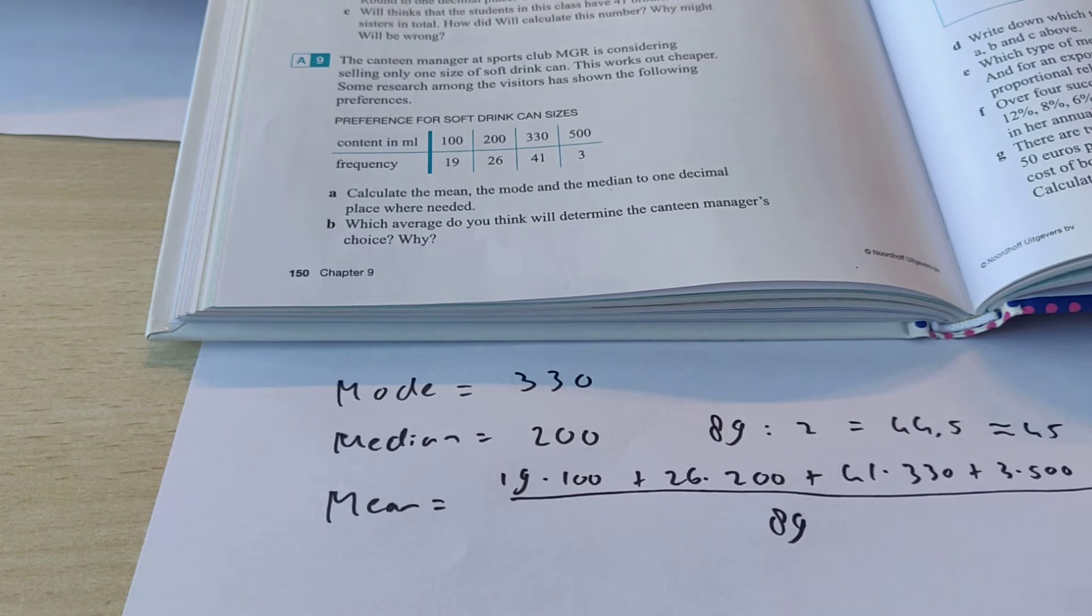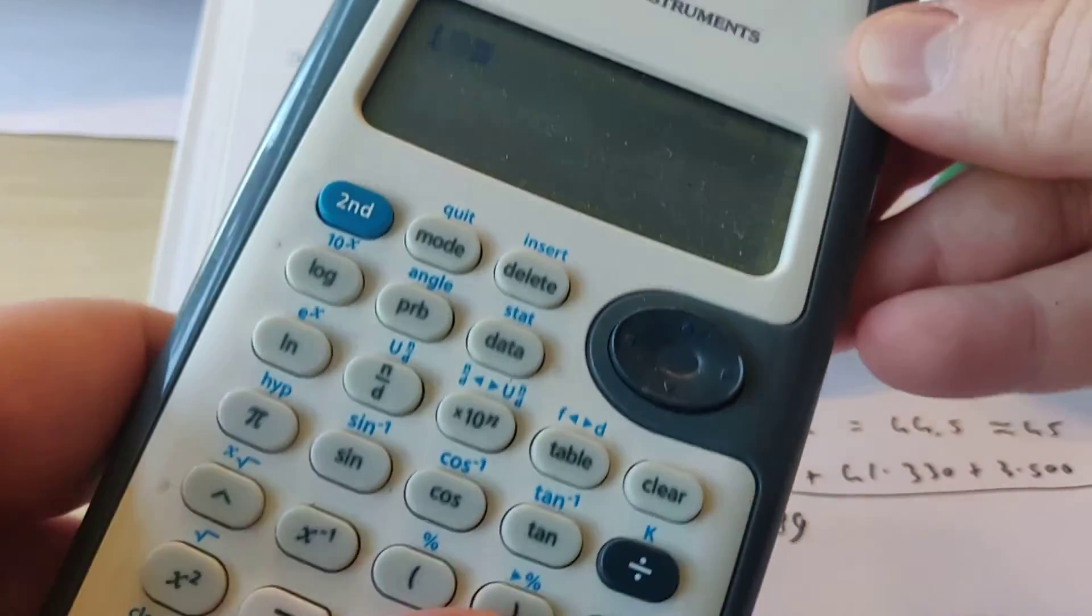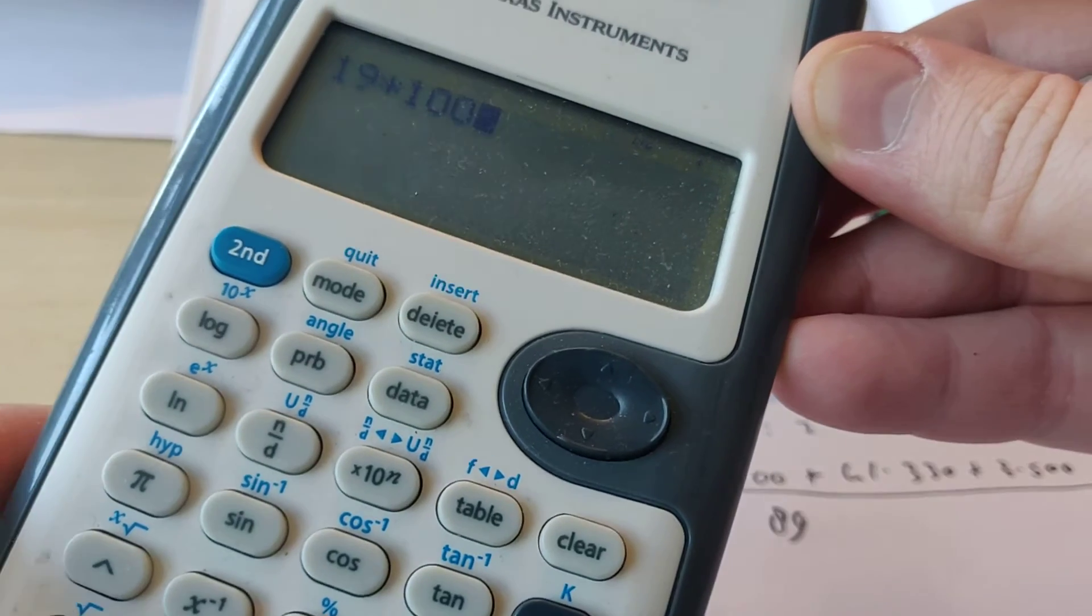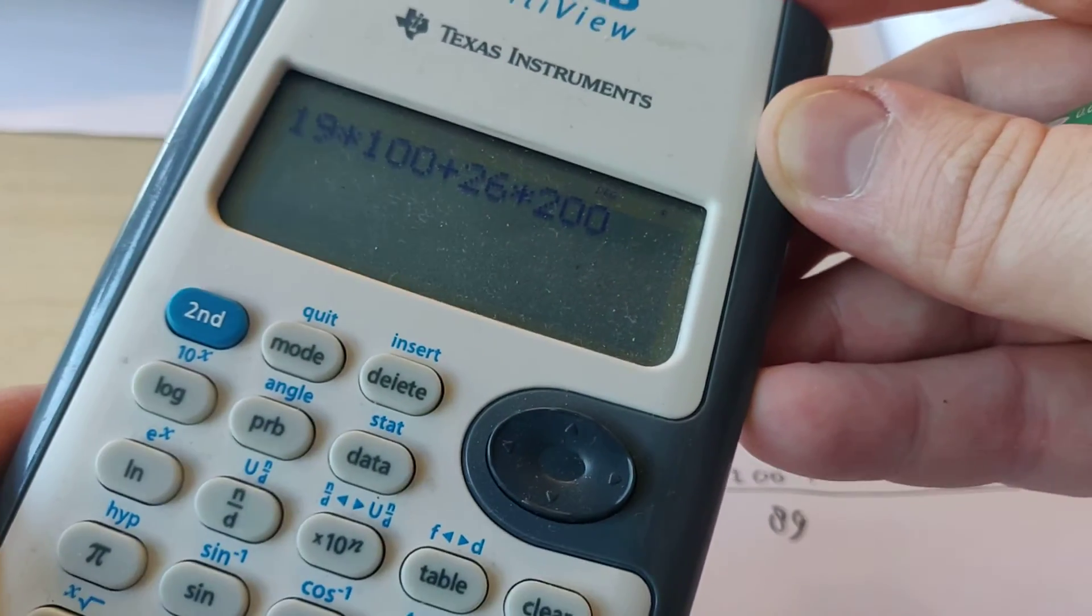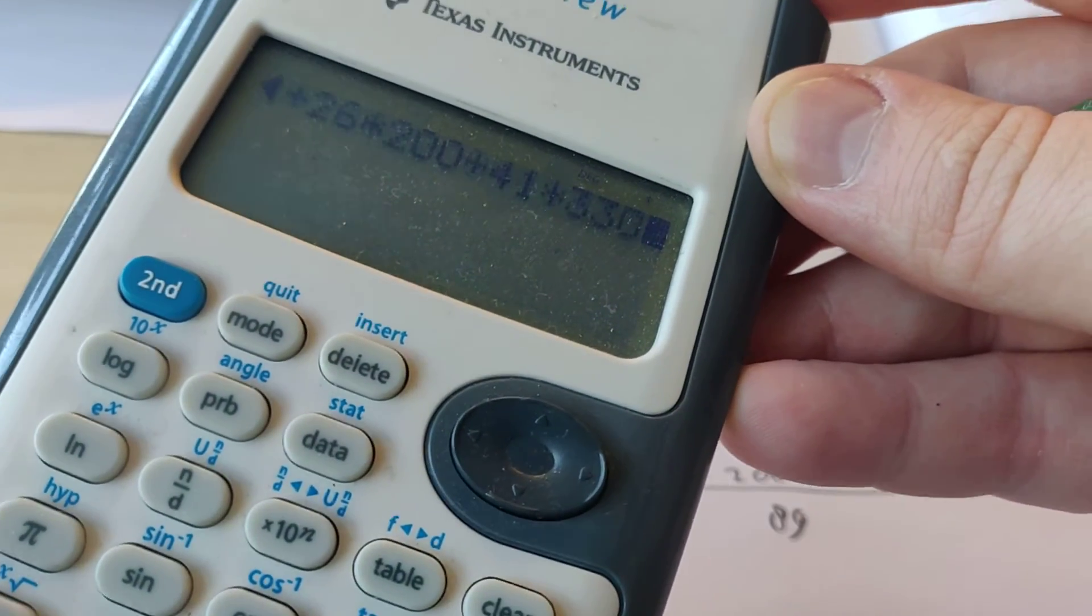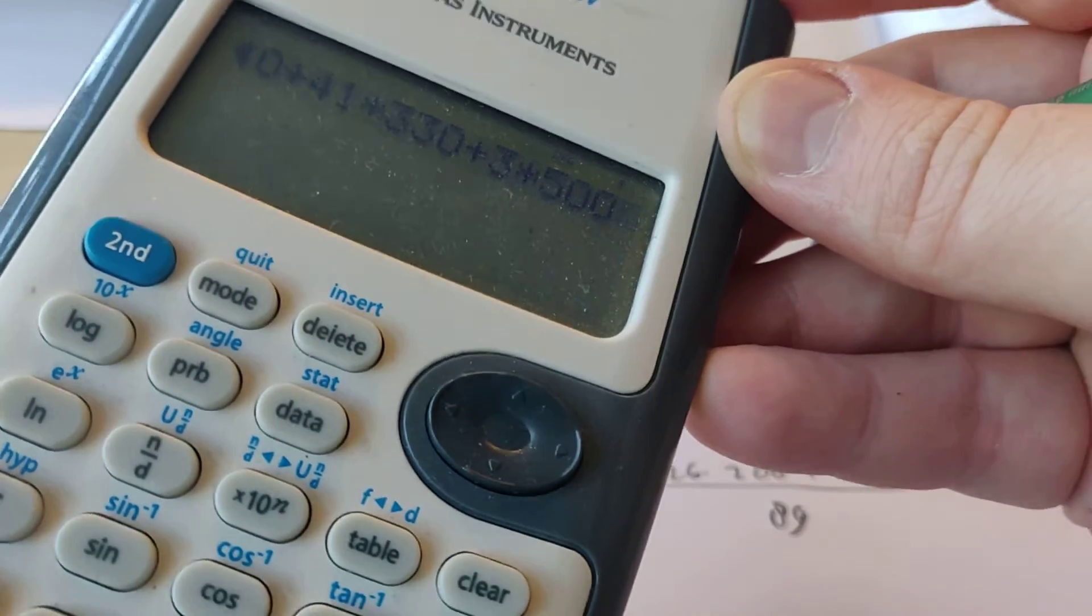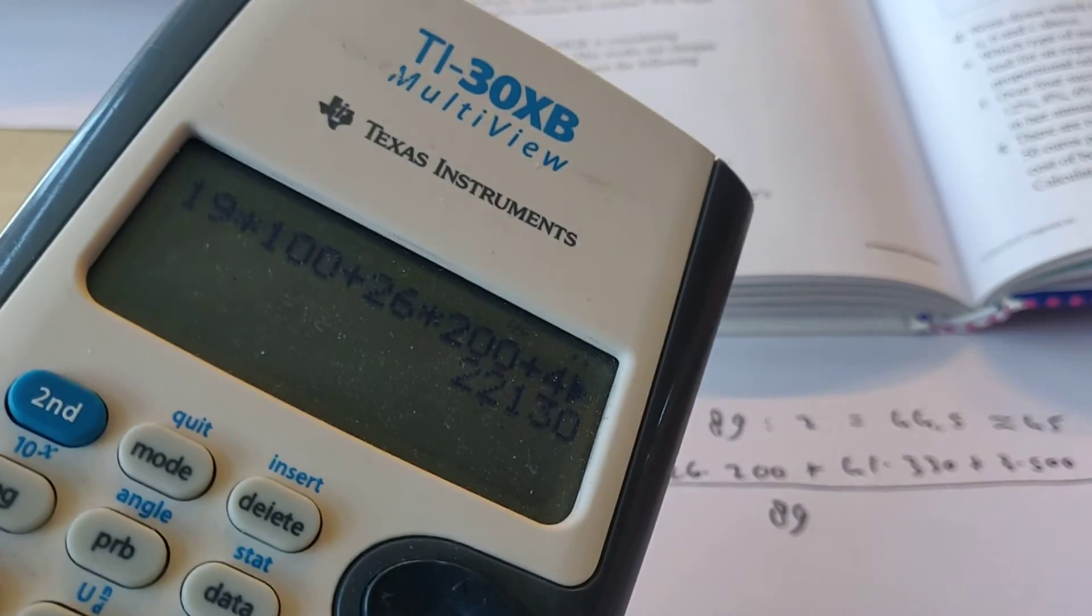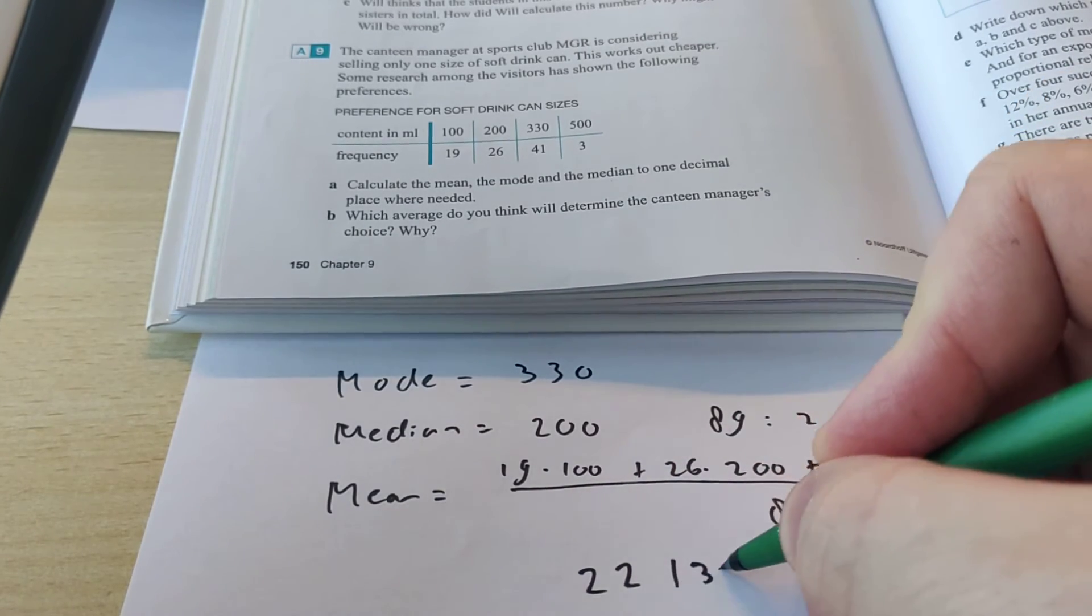Okay, so let's see what that will be. I have a calculator here. So, we do 19 times 100. Plus 26 times 200. Plus 41 times 330. Plus 3 people want 500. Okay. So, in total, they want it to be 22,130.